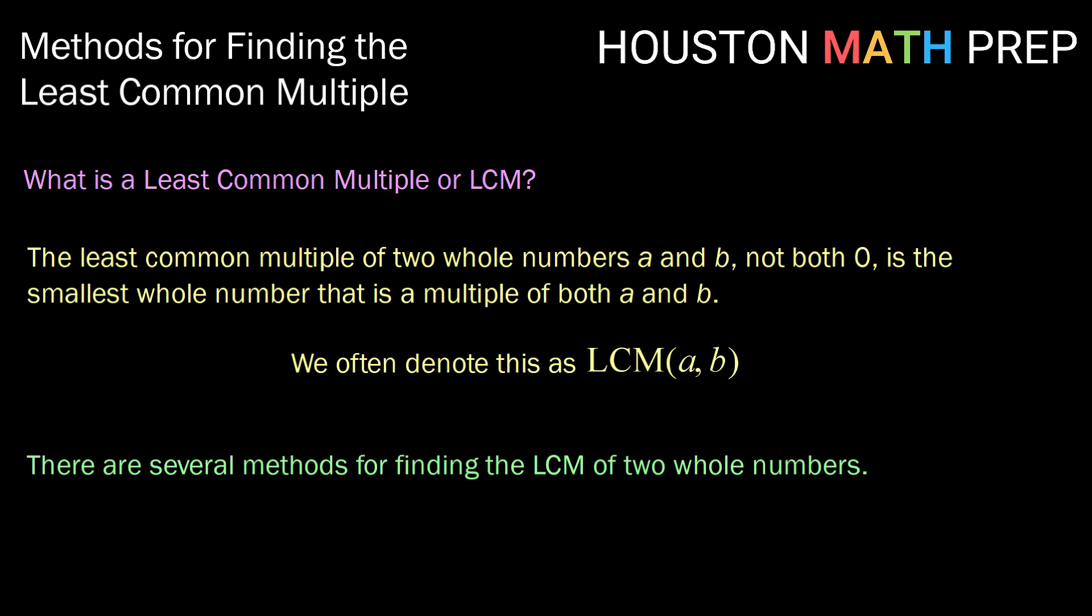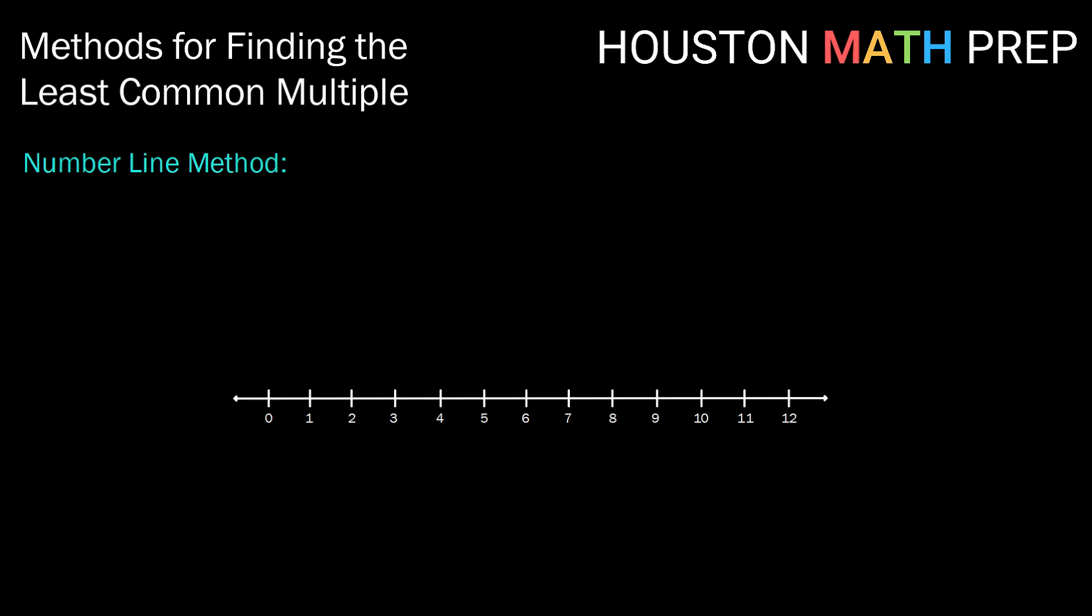We often denote this using the capital letters LCM of A and B. There are several methods for finding the LCM of two numbers, the first few of which we'll cover in this video. So one method is the number line method. This one is nice and visual.